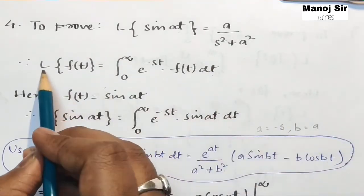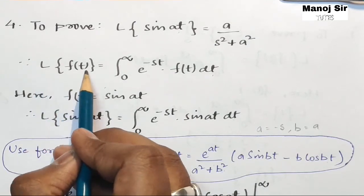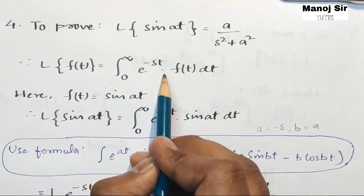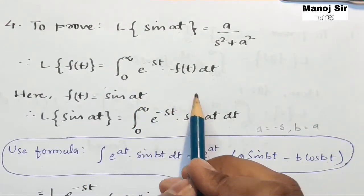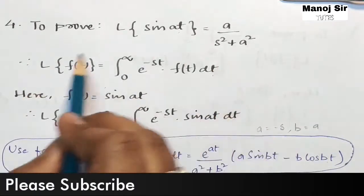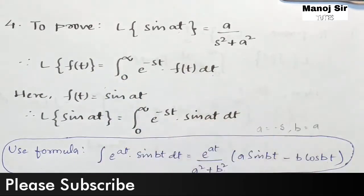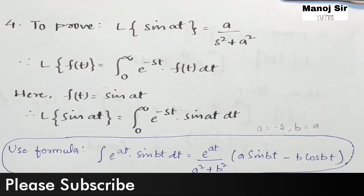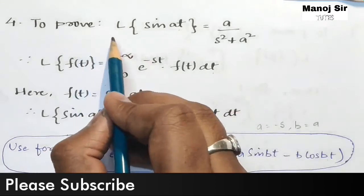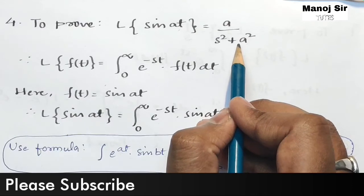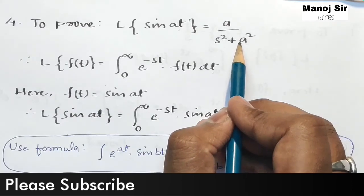The general formula of Laplace transform is: L{f(t)} = integration from zero to infinity of e to the power minus st into f(t) dt. By taking help of this basic general formula of Laplace transform, we are going to prove both parts. So let us start — we need to prove that the Laplace transform of sin(at) equals a upon s² plus a².